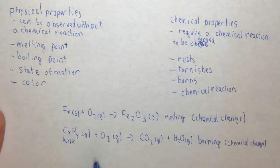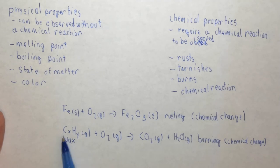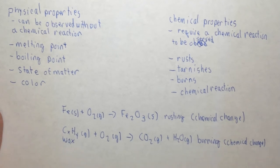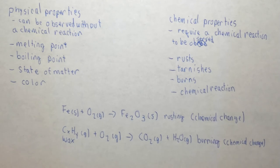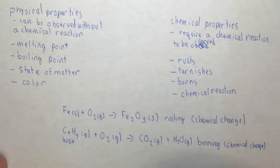Because we started with carbon bonded to hydrogen or carbon bonded to itself and some hydrogens, and we started with oxygen bonded to itself. And we ended up with the carbon bonded to the oxygen and the hydrogen bonded to the oxygen. So they're no longer bonded in the same way. So again, burning is a chemical change. The fact that wax is flammable is a chemical property.